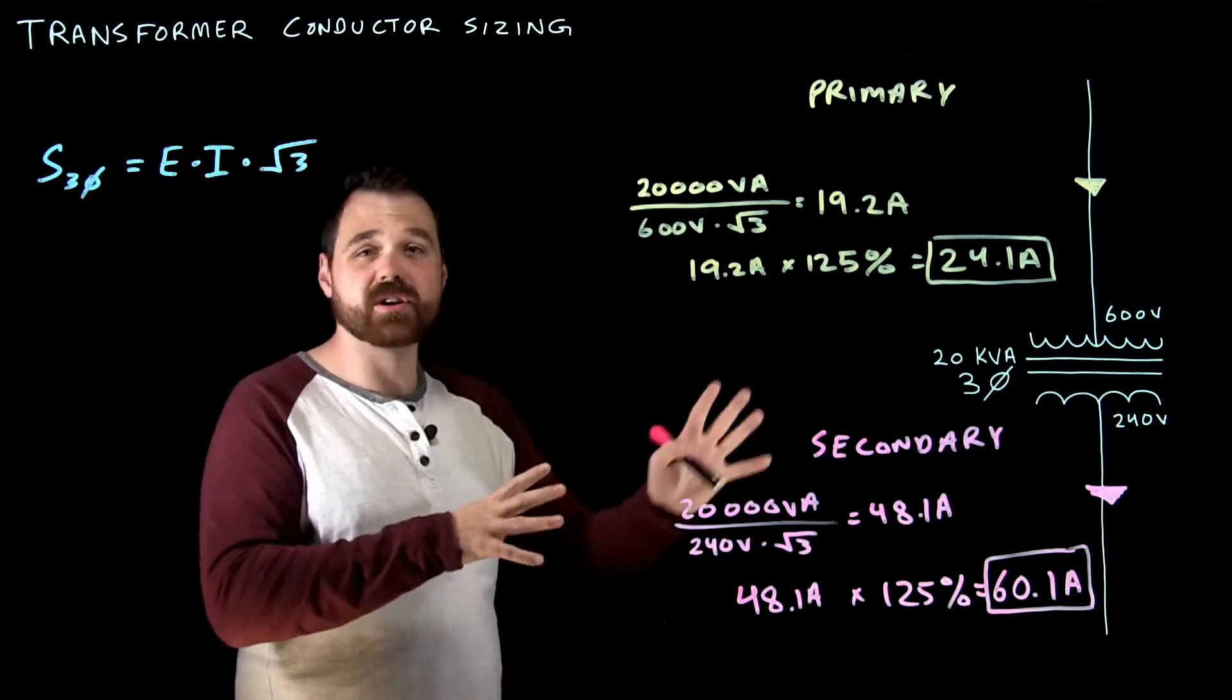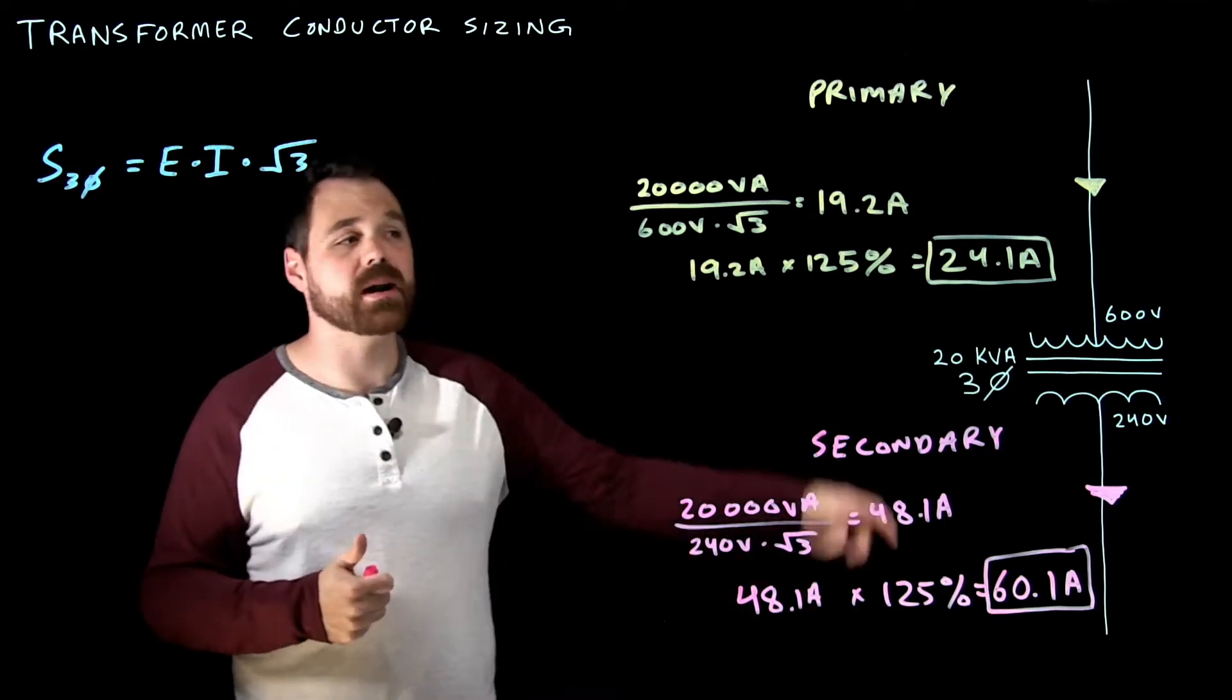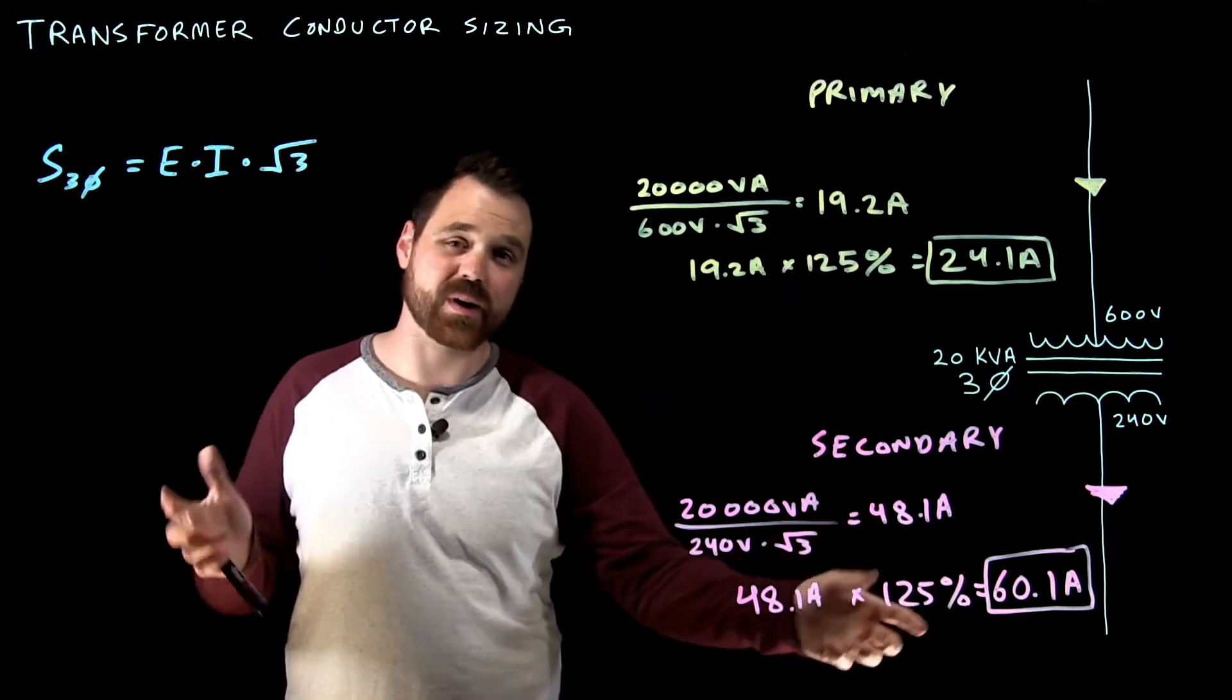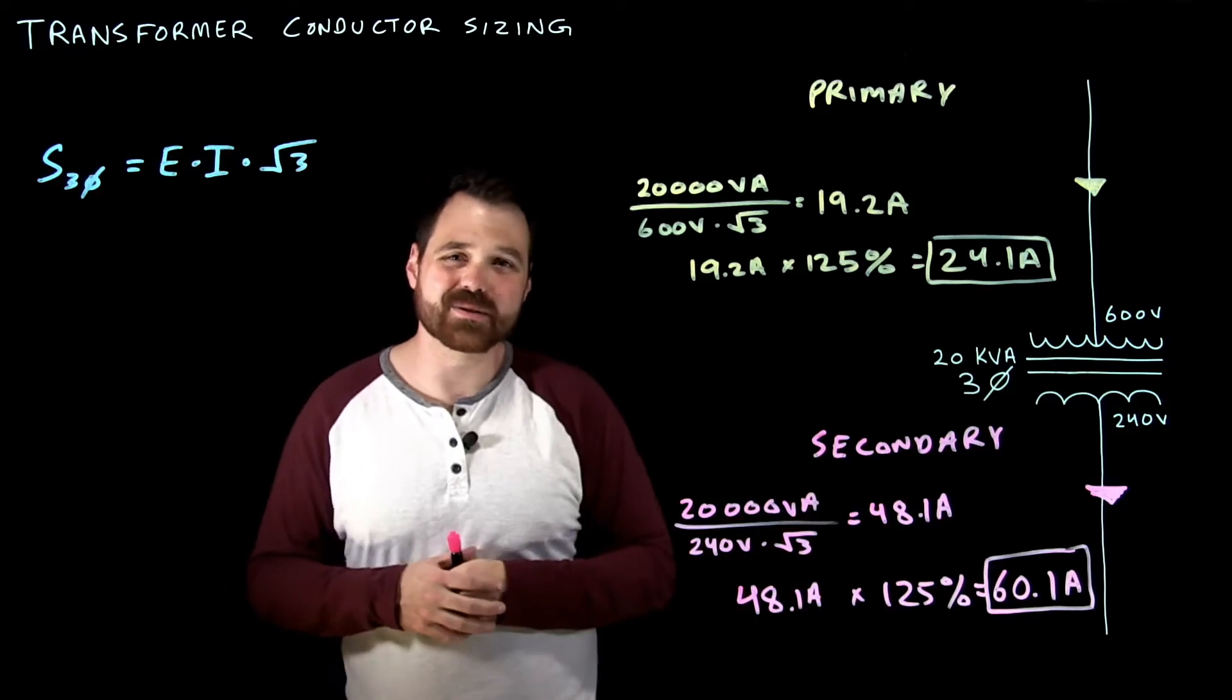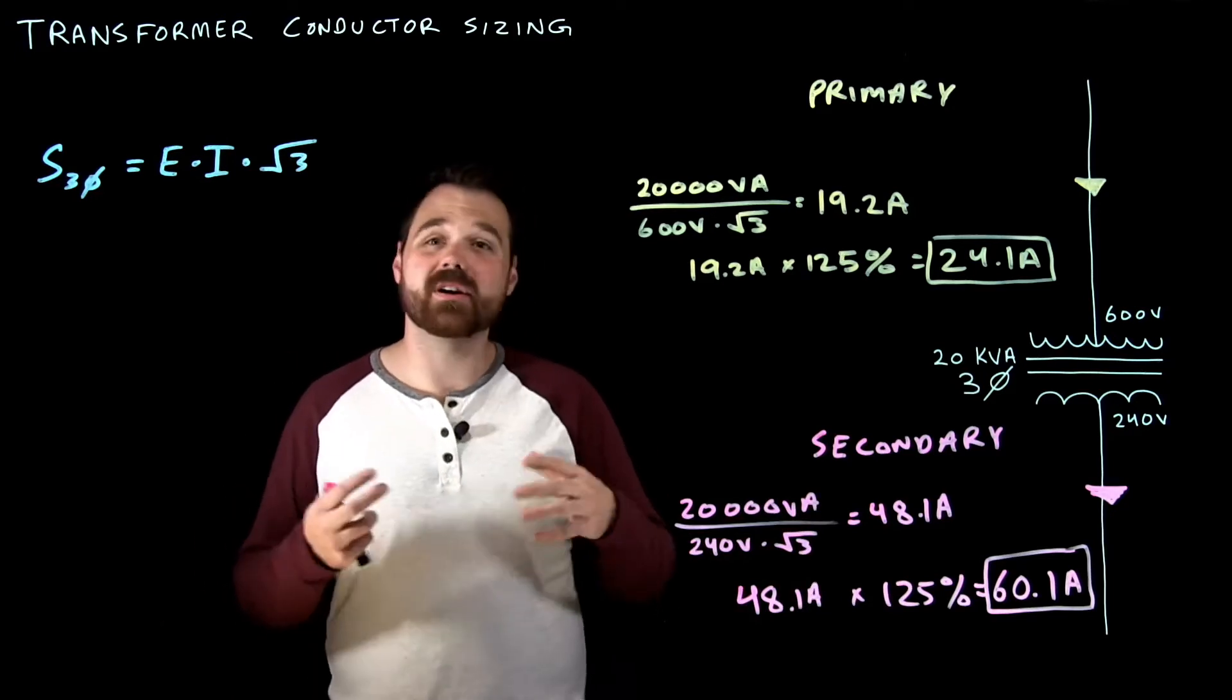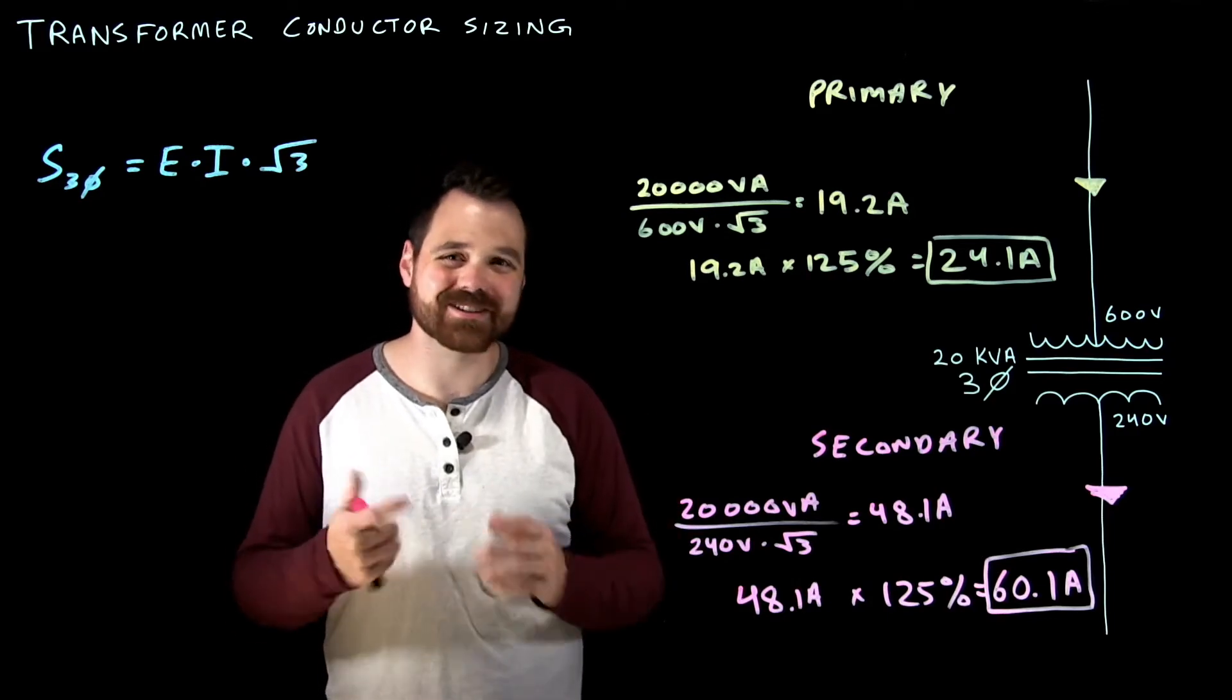So that's talking about a single transformer, very straightforward. 125% for the primary, 125% for the rated current of the secondary. And that's how we would size those conductors. Just one second here, we are going to calculate a transformer bank stick around.